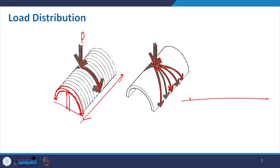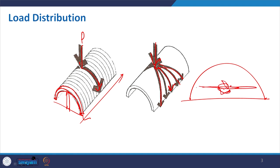Many of us are aware of the aircraft hangar - normally used to put aeroplanes for maintenance or to make a convention hall. We use this kind of arch form and take advantage of the vault to cover large spans.